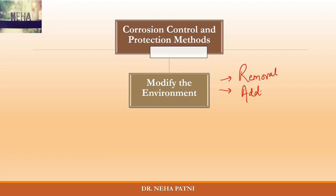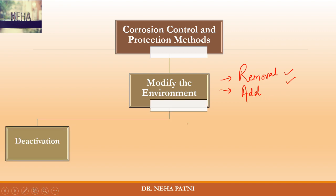In modifying the environment, we have to take care of two things only: first, either you remove that harmful constituent, and second, if it is not possible, then you add a specific substance which neutralizes the effect of that corrosive constituent. There are four methods — let me discuss them one by one.